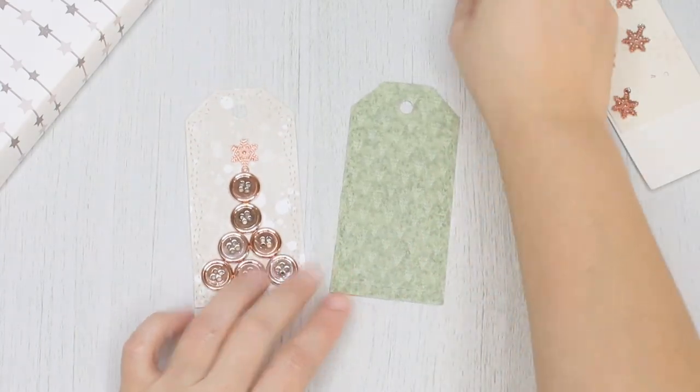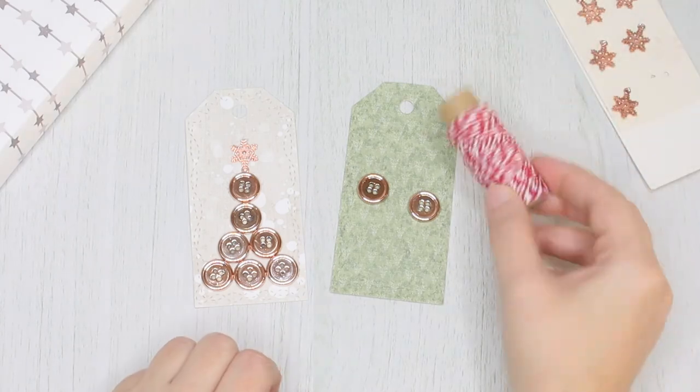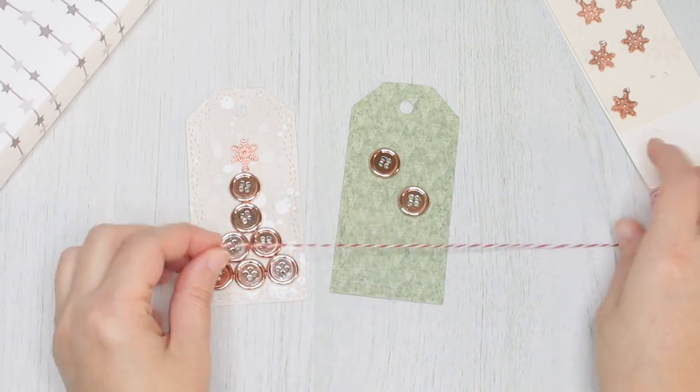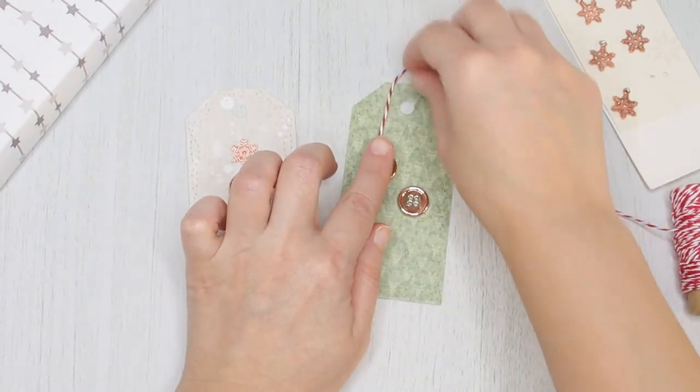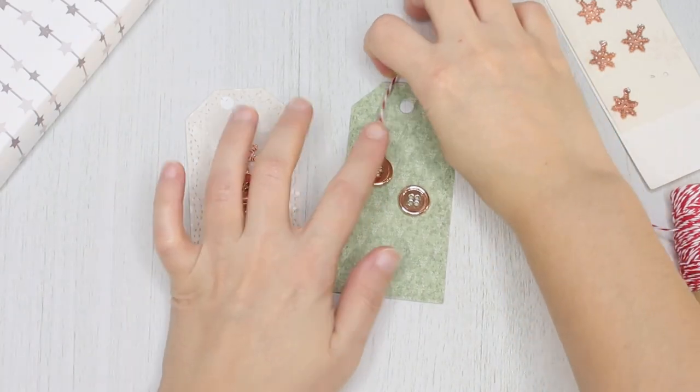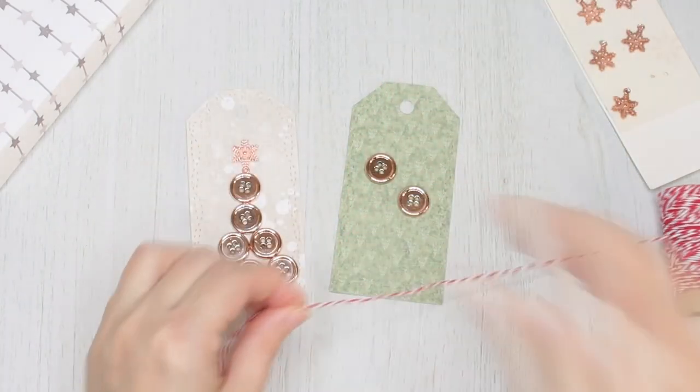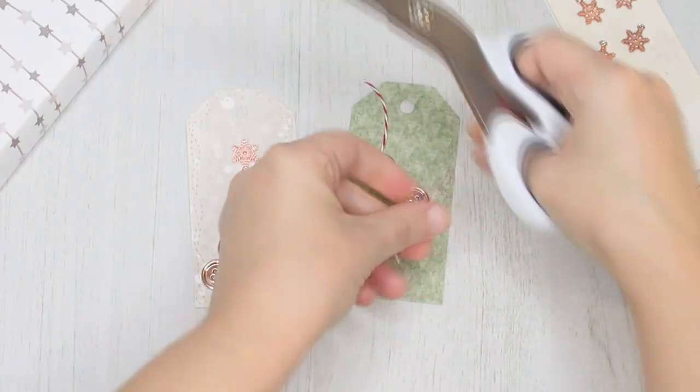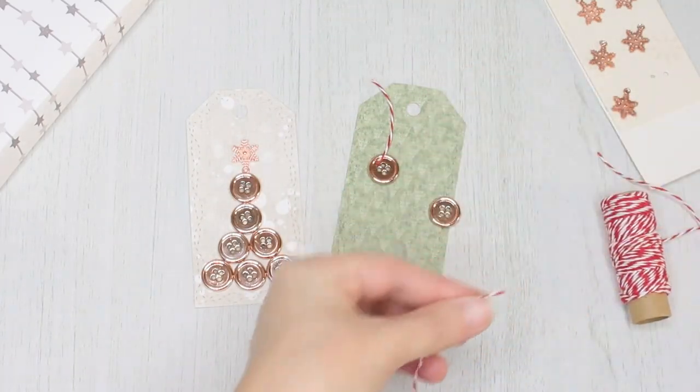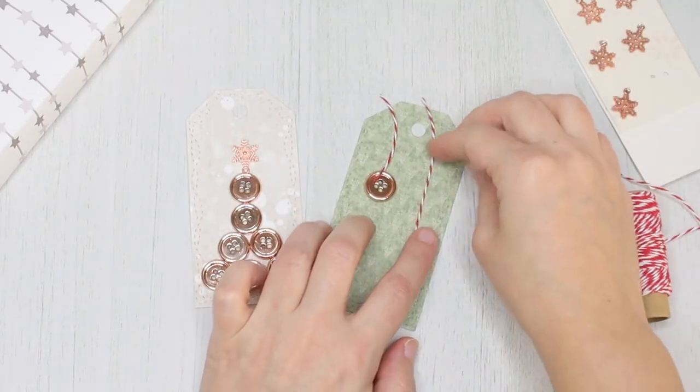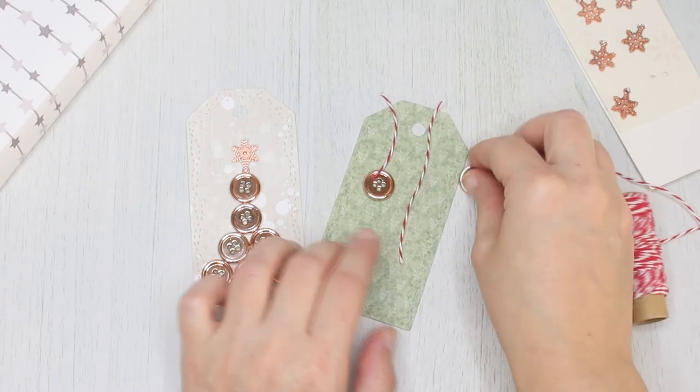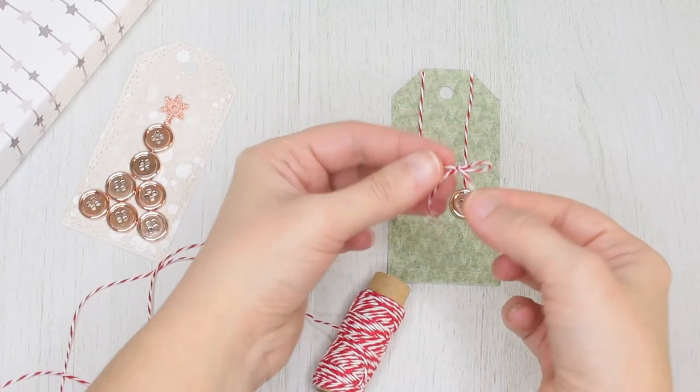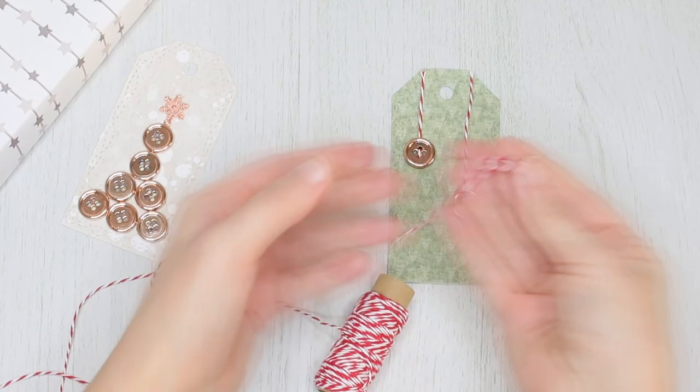For the second one I'm using buttons and twine. First I'm measuring and cutting my twine. This will be like Christmas baubles. After cutting the twine I used my hot glue gun to fix this onto the tag.